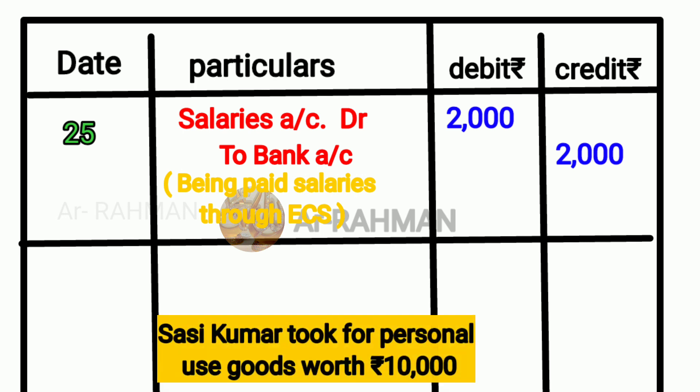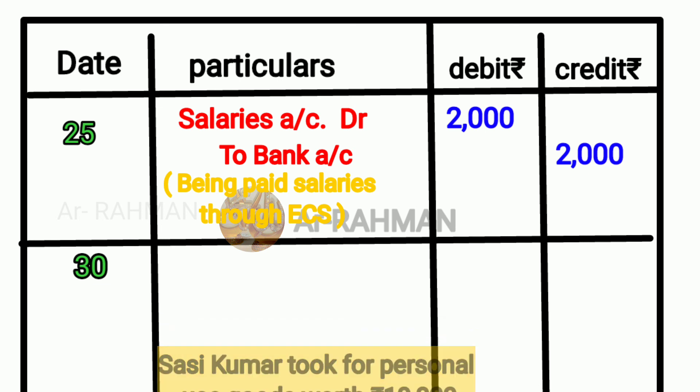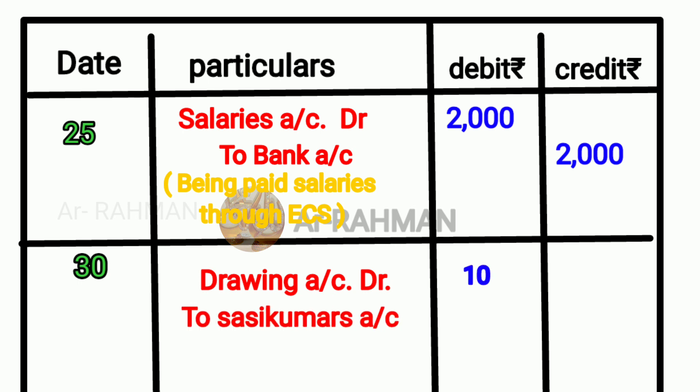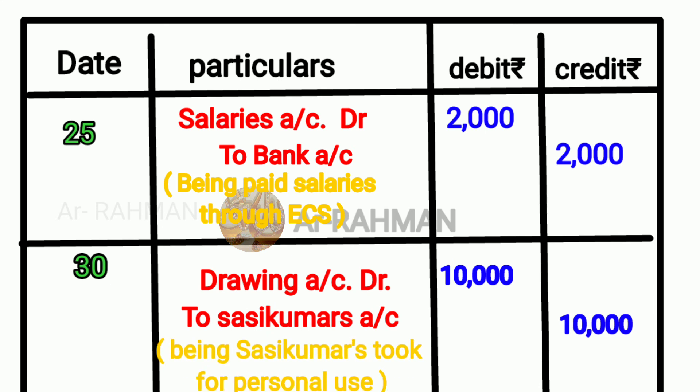Next question: Sasikumar took goods for personal use worth Rs.10,000. The owner Sasikumar is in capital. When the owner withdraws for personal use, that is drawing. Drawing is always debit. Withdrawn goods for personal use — that is drawing. So drawing account Dr, to Sasikumar account Rs.10,000. Narration: being Sasikumar took goods for personal use.